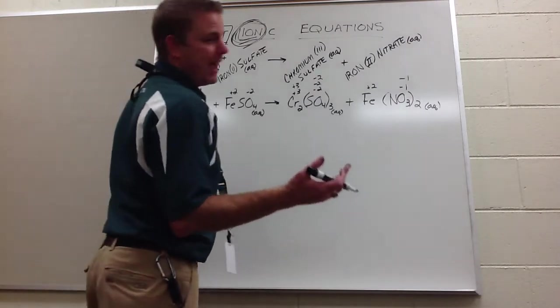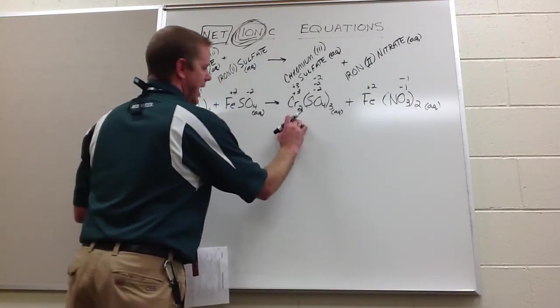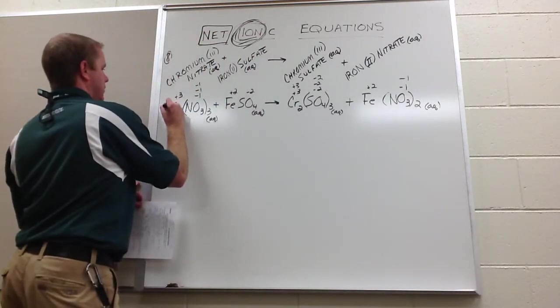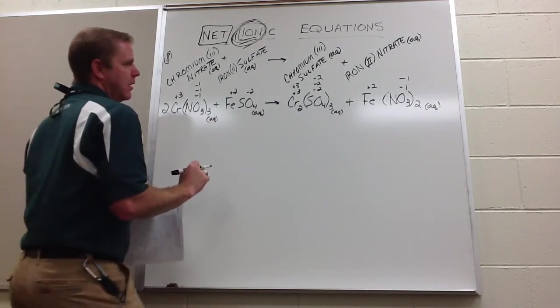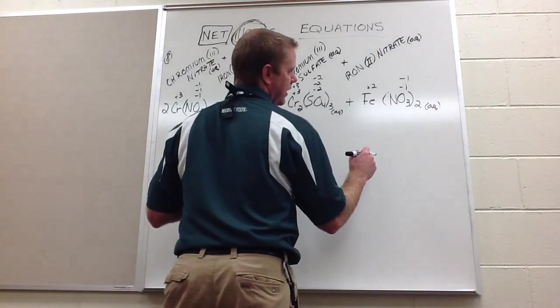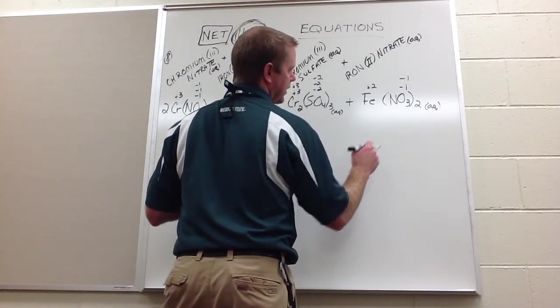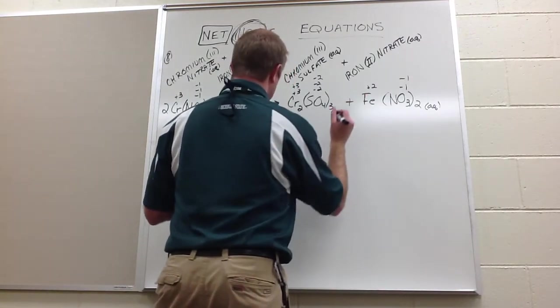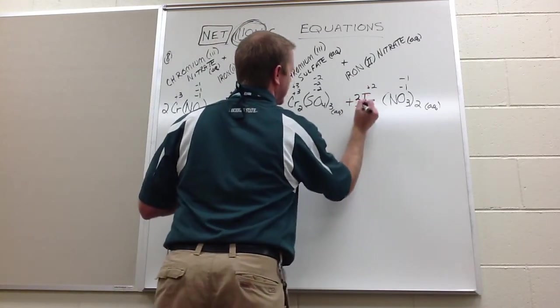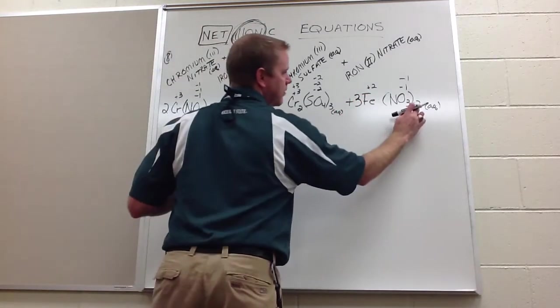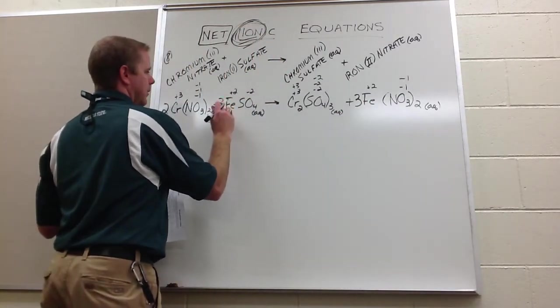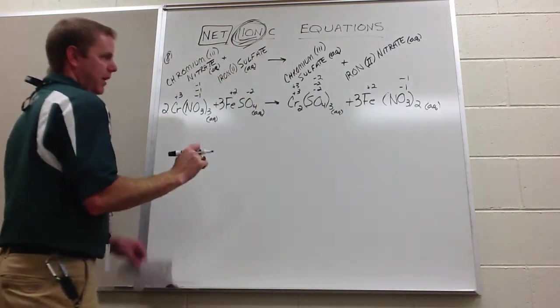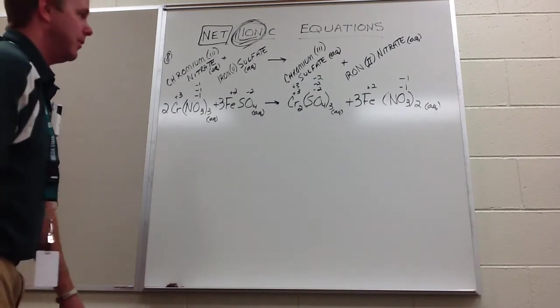I have to make sure it's balanced. It is not. So I see here that I need two chromiums, that gives me six NO3s. Then I've got to think about six NO3s over here, right? So what I do here is I end up putting a three, and that gives me six nitrates, but it also gives me three irons. That's okay, because if I get a three right there, I get three irons and three sulfates. This is a pretty nasty problem.